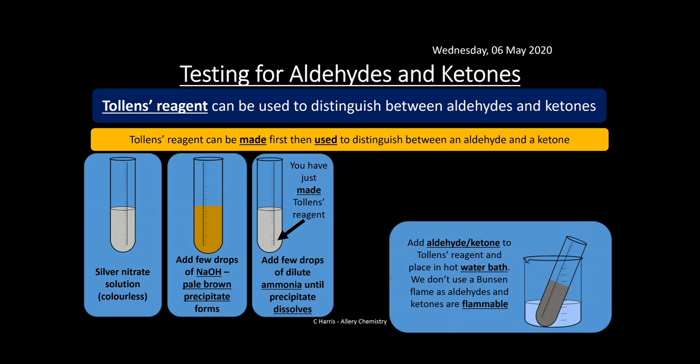We don't use a Bunsen burner because aldehydes and ketones are flammable — the last thing you want is a naked flame underneath a test tube containing them. You'd end up with fire coming out the top of the test tube and all sorts of problems. Use a water bath; it's much safer.